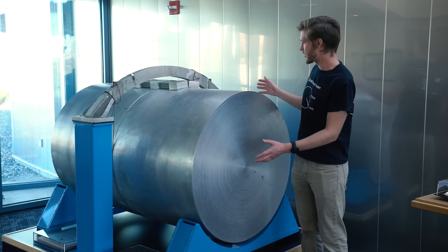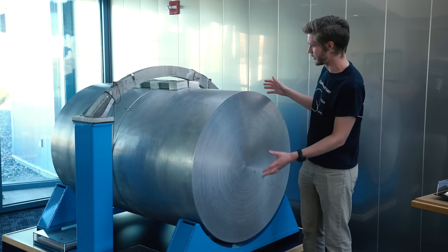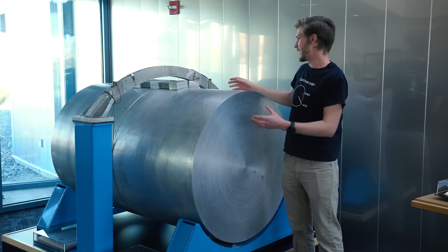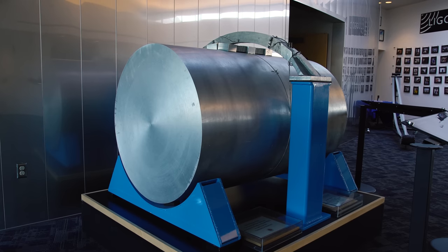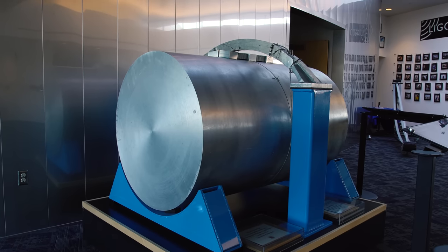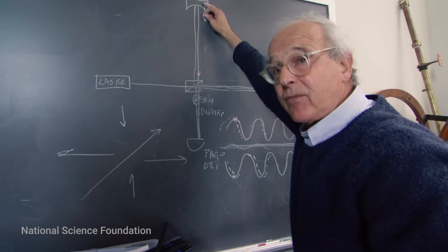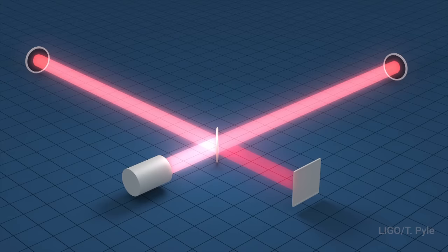In the 50s, Joseph Weber first tried to detect gravitational waves using a 6,000 pound chunk of aluminum. The idea is that it would resonate when gravitational waves went through it, and that would be picked up by piezoelectric crystals on the top. Unfortunately, it just wasn't possible to get the precision needed. In 1972 though, Ray Weiss wrote a paper detailing how an interferometer could be used to detect gravitational waves.